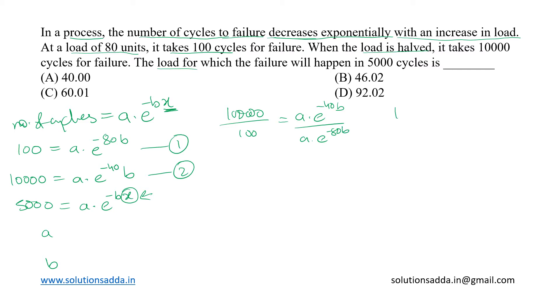Dividing them, we shall get 100 equal to e raised to 40b, because minus 80b will come upside, that will become 80b minus 40b equal to 40b.